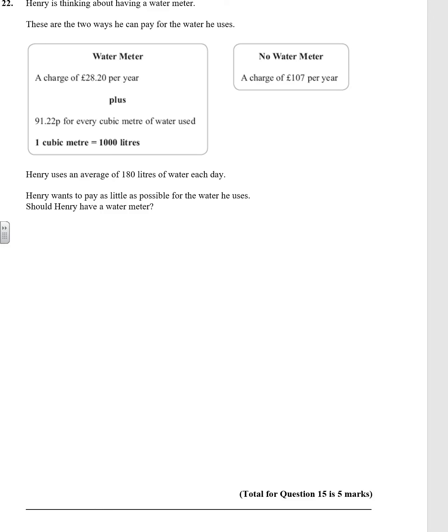All right, 22. Henry's thinking about having a water meter. There are two ways he can pay for the water he uses. We've got water meter, a charge of £28.20 per year plus an amount for the water he uses, or no water meter. Well, that's easy, that's £107 per year.